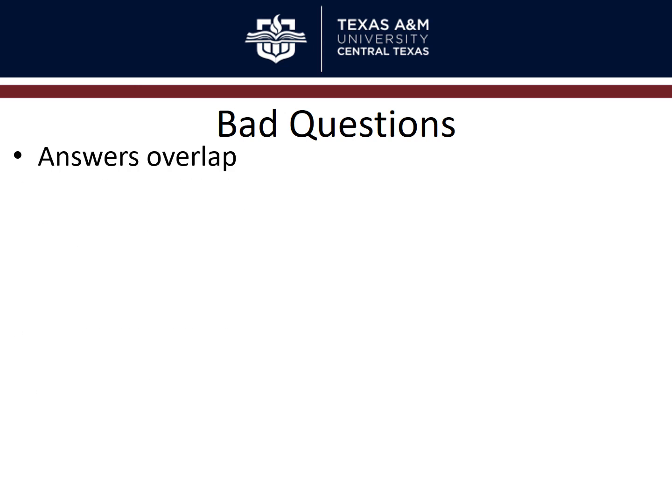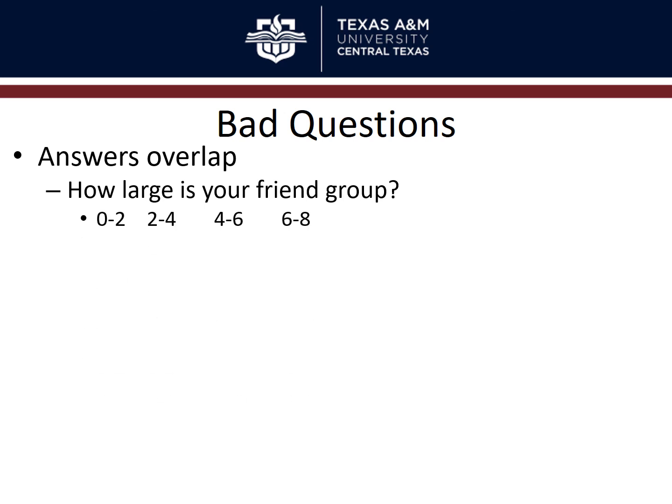Also watch out for response option problems. If your answer categories overlap, it's confusing — for example, friend group sizes of 0–2, 2–4, 4–6, 6–8 leaves someone with exactly six friends unsure which to pick. You want disjunctive, non-overlapping categories.